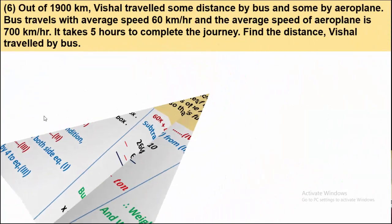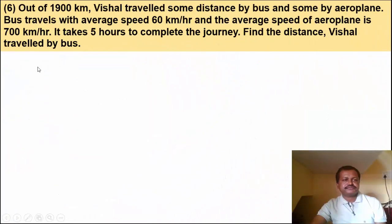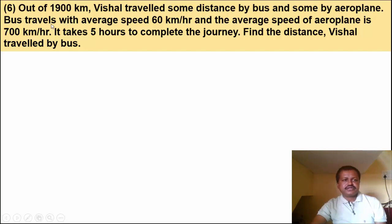Now we solve example number 6. Out of 1900 km, we shall travel some distance by bus and some by aeroplane. Bus travels at average speed 60 km per hour and aeroplane at 700 km per hour.